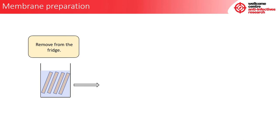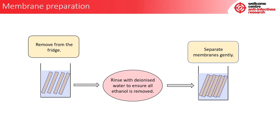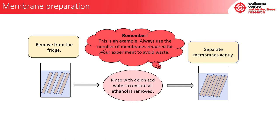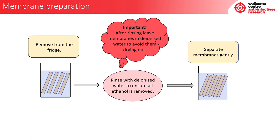Whilst the compounds and controls are equilibrating on the bench, the membranes and dialysis block can be prepared. First, remove the membranes from the fridge. Then rinse them with deionised water to ensure all ethanol is removed. Finally, separate the membranes gently and ensure that you have all membranes needed. It is important that the membranes are left in deionised water until use to avoid them from drying out.